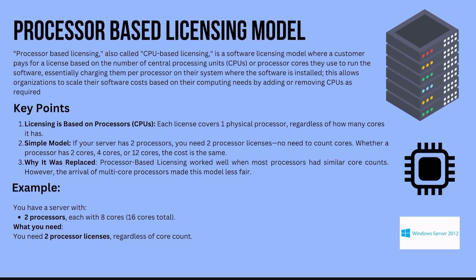Why was it replaced? Processor-based licensing worked well when most processors had similar core counts. However, the arrival of multi-core processors made this model less fair. For example, a single processor with two cores cost the same license price as one with 16 cores, which created significant inefficiencies.